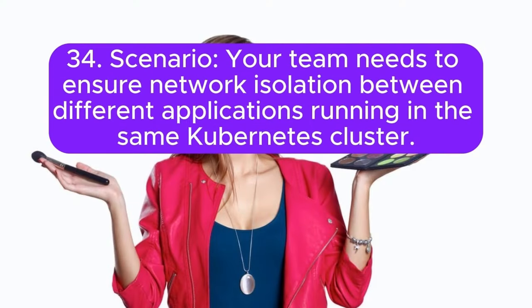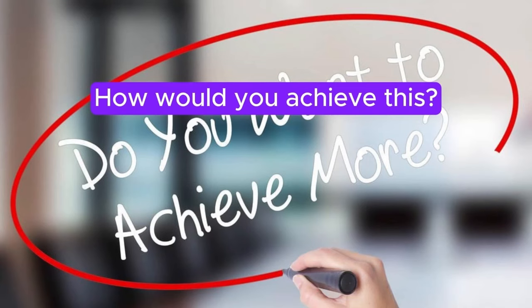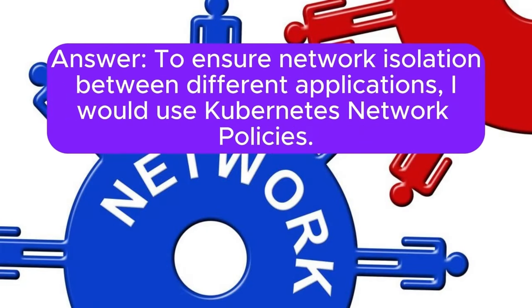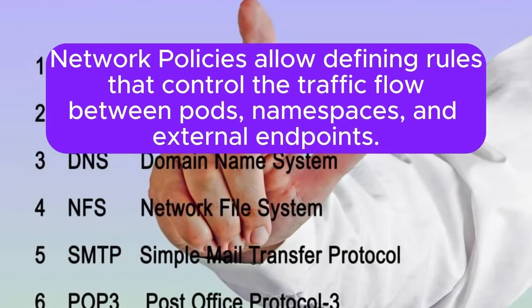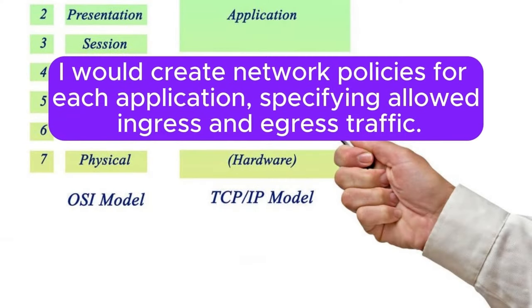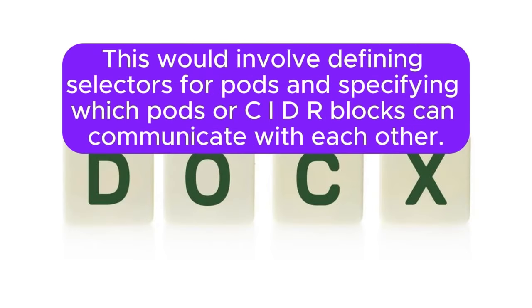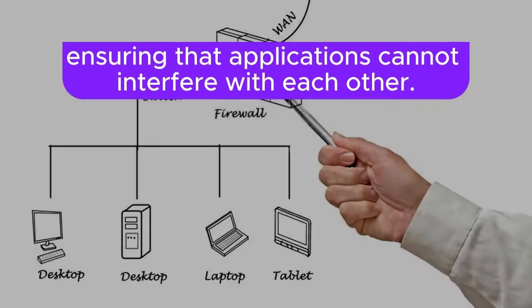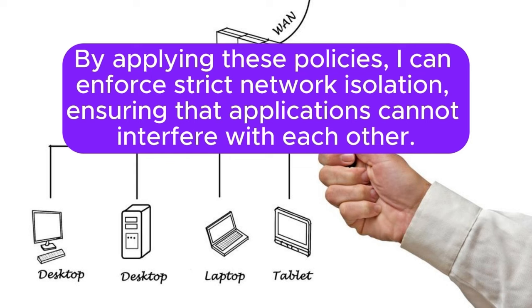Scenario 34: Your team needs to ensure network isolation between different applications running in the same Kubernetes cluster. How would you achieve this? Answer: To ensure network isolation between different applications, I would use Kubernetes network policies. Network policies allow defining rules that control the traffic flow between pods, namespaces, and external endpoints. I would create network policies for each application, specifying allowed ingress and egress traffic. This would involve defining selectors for pods and specifying which pods or CIDR blocks can communicate with each other. By applying these policies, I can enforce strict network isolation, ensuring that applications cannot interfere with each other.